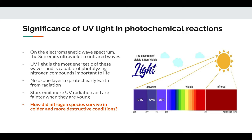One of the main issues to forming these important compounds is that Earth's early atmosphere had no oxygen, and no way to form an ozone layer to protect the Earth from this UV radiation. Another issue is that young stars emit more UV radiation and are fainter when they're young. So the question arises: how did nitrogen species survive in colder and more destructive conditions?